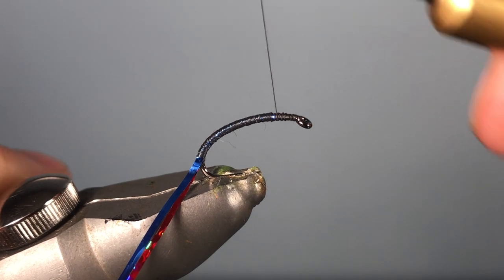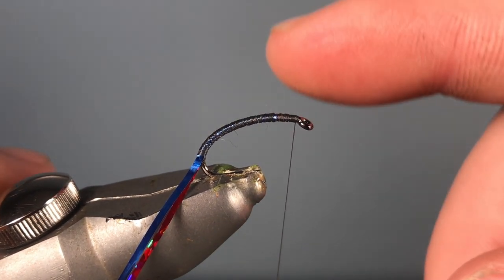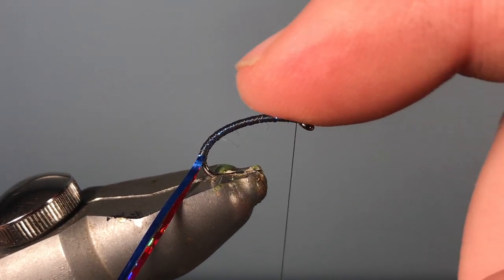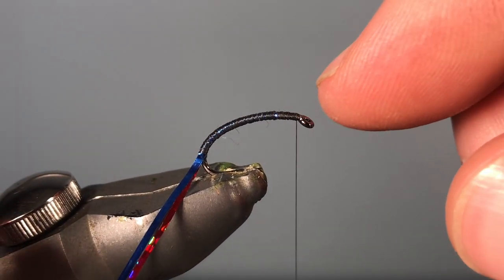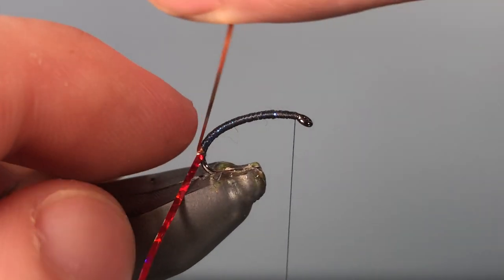Then once you've done that, bring your thread to the eye of the hook. And the hook we're using today is a size 12 grub style hook from Eyebrook Tackle Shop. And once you've done that, you grab your tinsel.